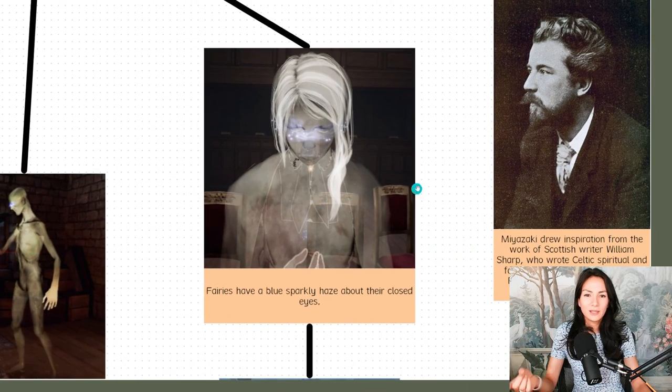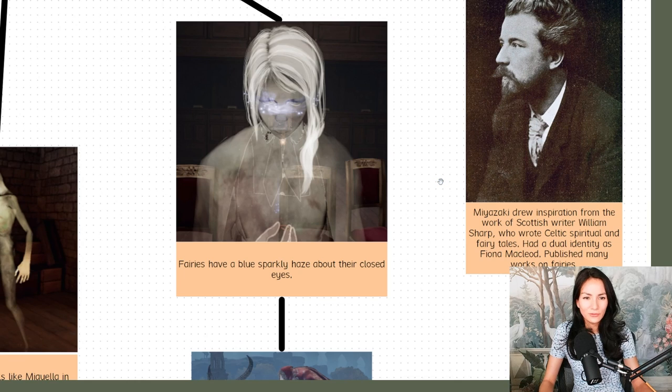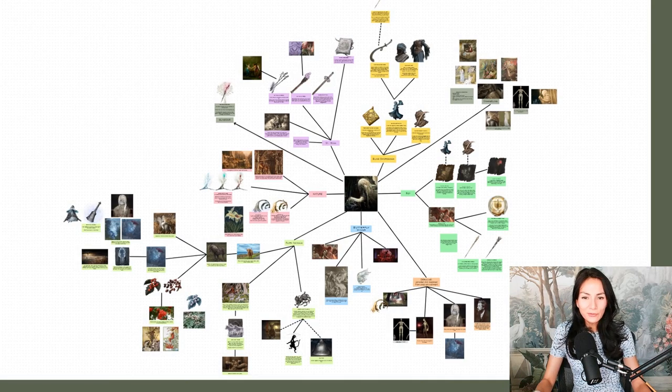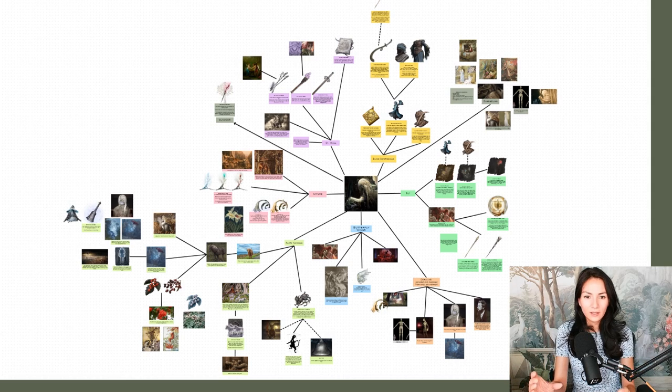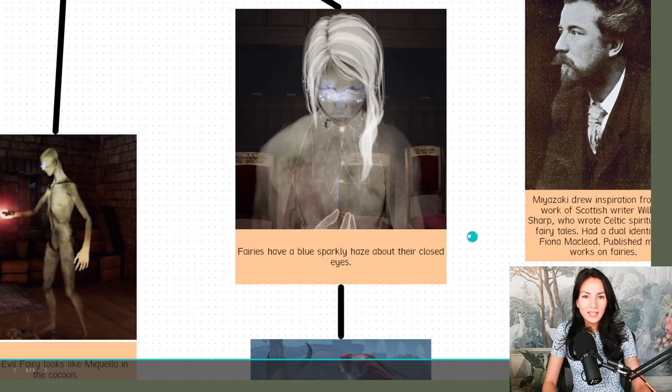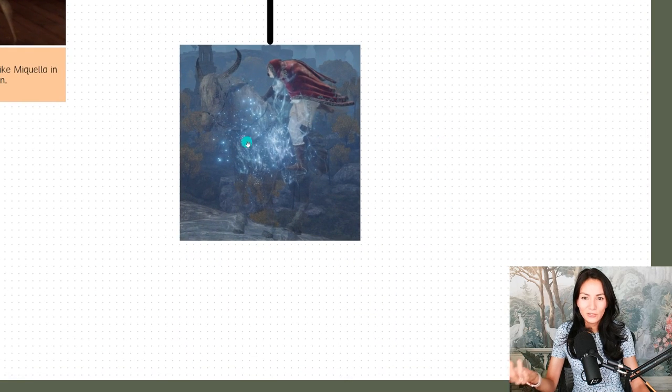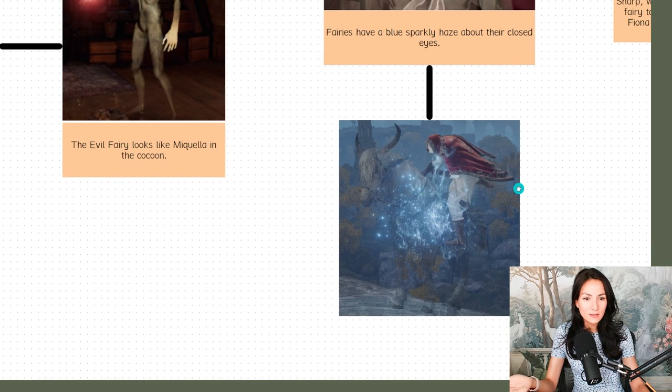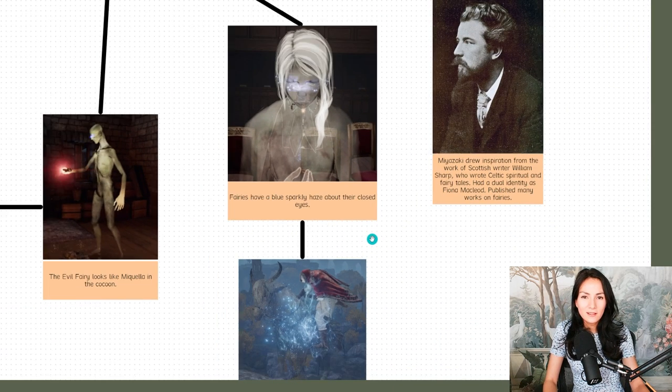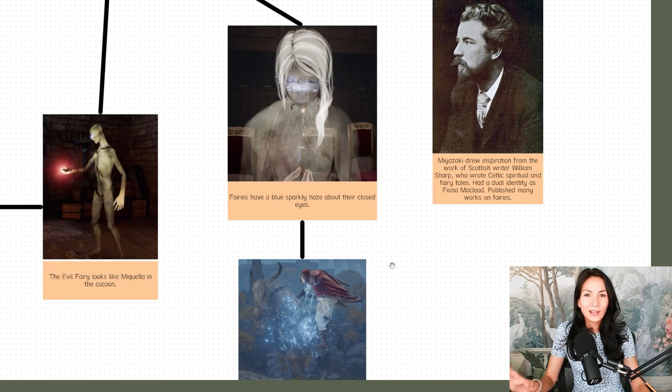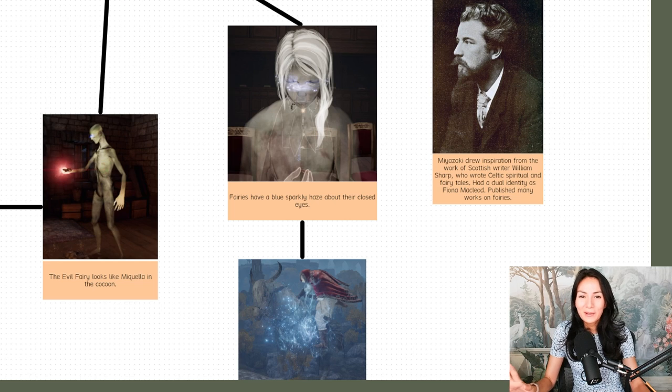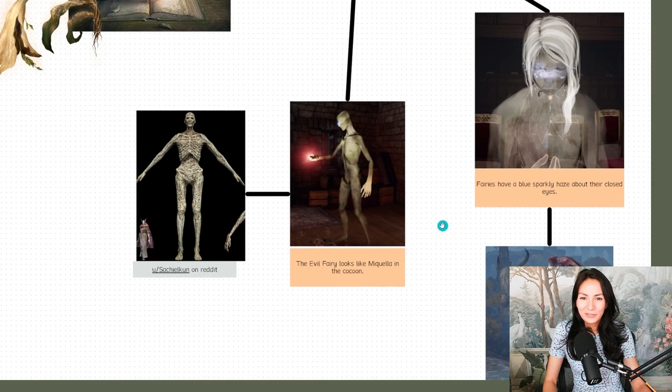The fairies in this game have this blue sparkly haze that covers their eyes. I thought that looks so much like the same kind of blue sparkly haze that you use when you summon Torrent or you summon the spirits. So I thought, maybe that's another connection there.